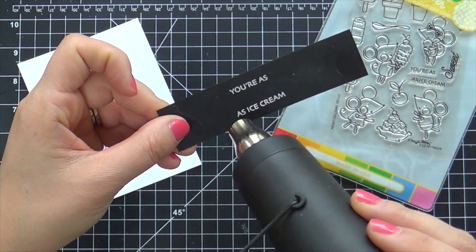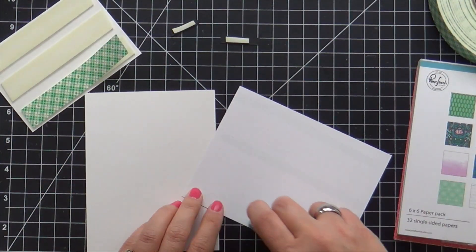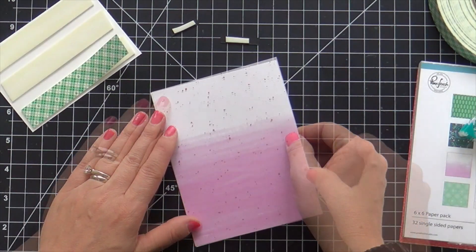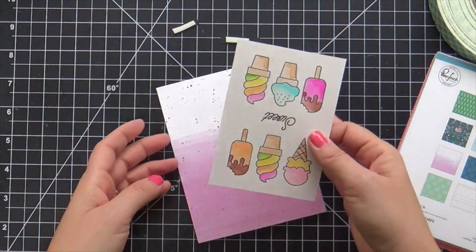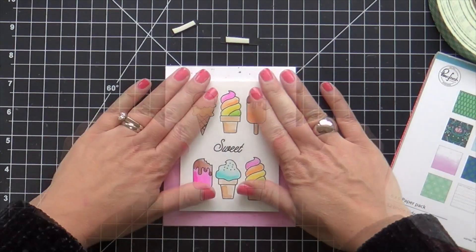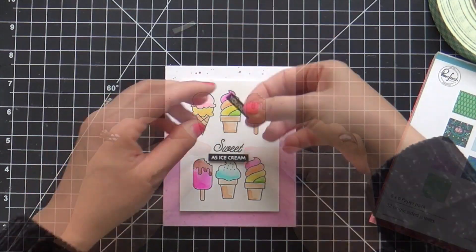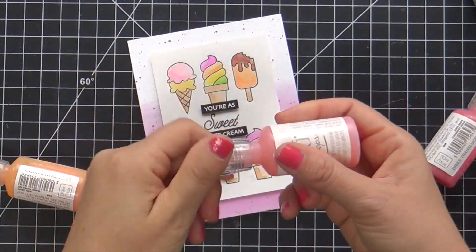So now I'm going to start adhering this whole card together. I have some pattern paper by Pink Fresh Studio that I'm putting some tape runner on the back and adhering that to a white card base. I've got foam tape on the back of my painted ice cream panel here and then my little sentiment strips as well, popping those up. It says, 'You're as sweet as ice cream.'